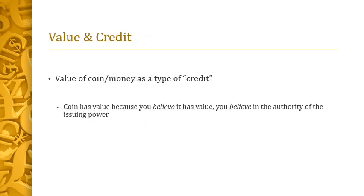The value of money is closely associated with the monarch's power, or the authority of the issuing power. In a sense, the value of any coin — or any form of money — is a type of credit. The coin has value because we believe it has value; we credit it with value. We believe in the authority of the issuing power, so we believe in the value of the money they issue.